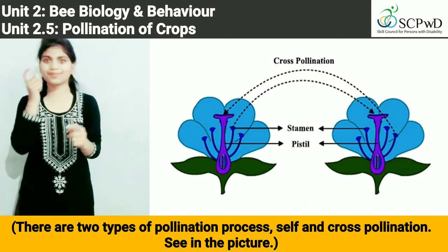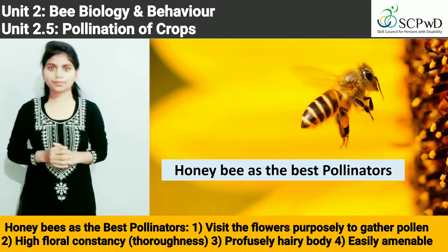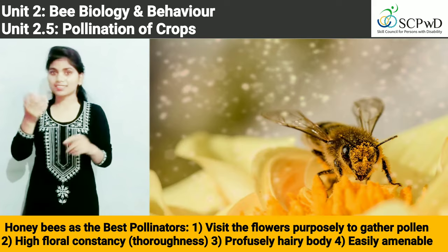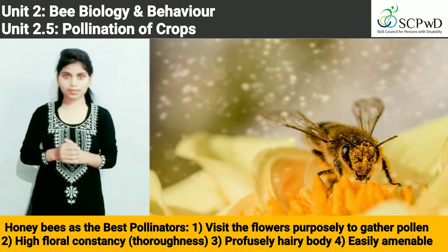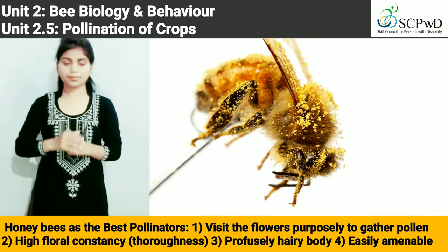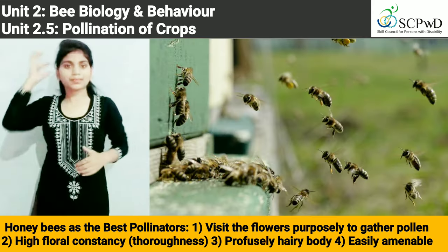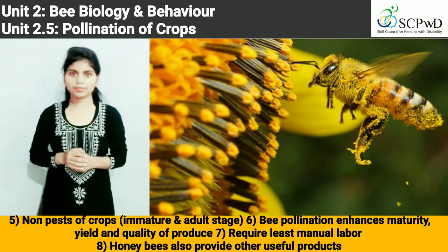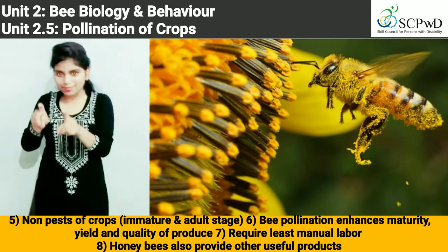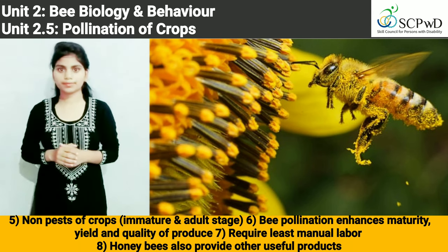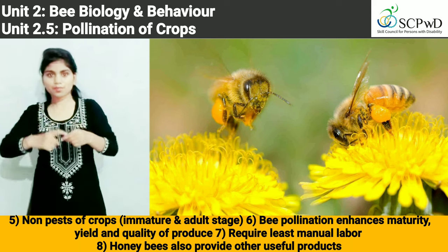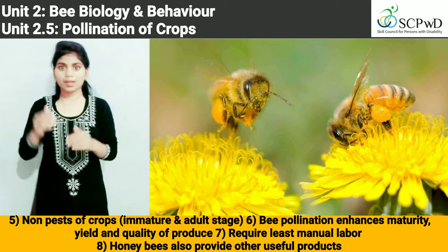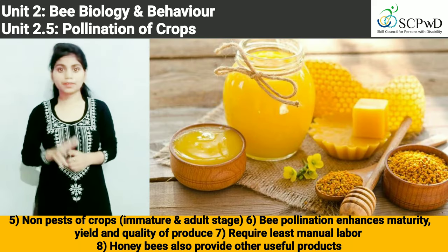The process of transfer of pollen from the male part of a flower to the female reproductive organ of a plant, to enable its fertilization, is known as pollination. There are two types: self-pollination and cross-pollination. Honeybees are the best pollinators because they: 1. Visit flowers purposely to gather pollen; 2. Have high floral constancy; 3. Have a profusely hairy body; 4. Are easily amenable; 5. Are non-pests of crops; 6. Bee pollination enhances maturity, yield, and quality of produce; 7. Require least manual labor; and 8. Also provide other useful products.